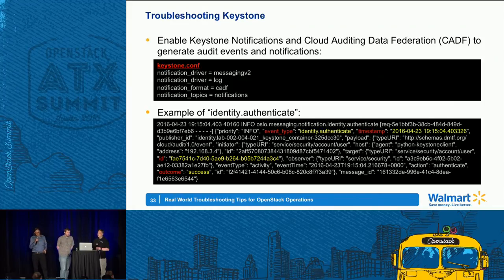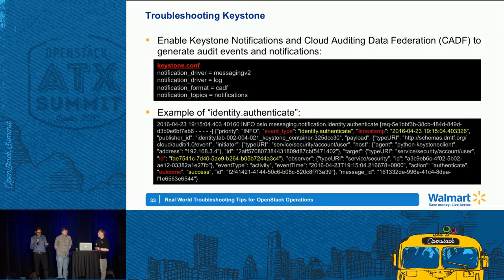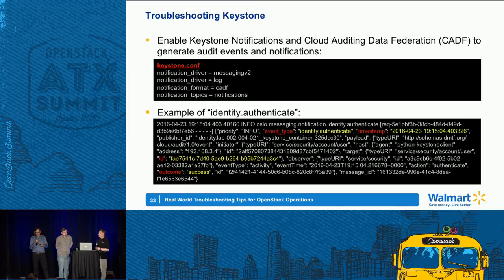Here's an example of a successful authentication event. You can see all kinds of information here — it's all one line in the log file, but you can send this to your telemetry services. Hopefully you have all that centralized and automated and alerting properly. This gives you a lot of information about the authentication request.